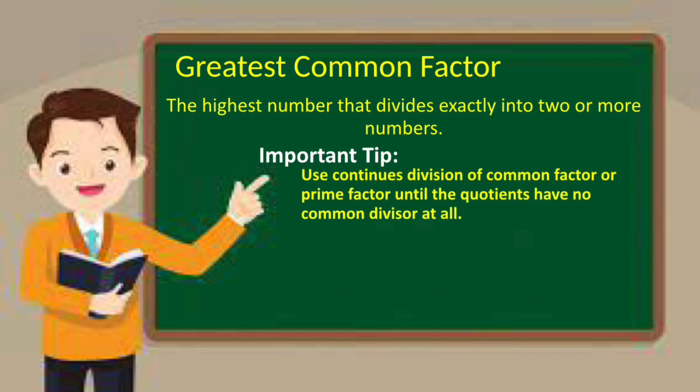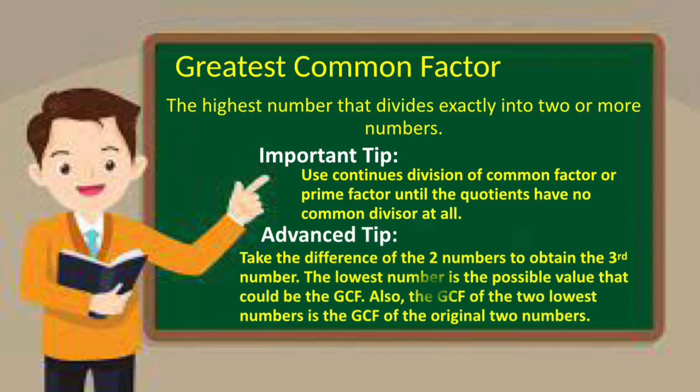Advanced tip: subtract the two given numbers to get the third number. The lowest number could be the GCF, or the GCF of the two lowest numbers is the GCF of the original two numbers.